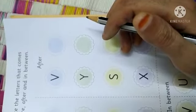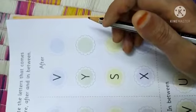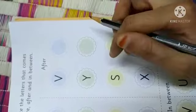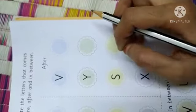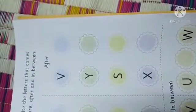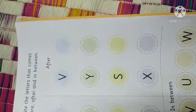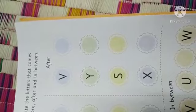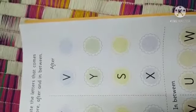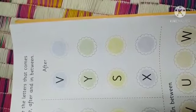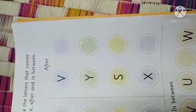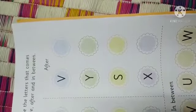Eek baar hum loog A, B, C, D kertate hai. L, M, N, O, P, Q, R, S, T, U, V. V ke pehle ke aata hai? U. Toh, before ho gaya. V, W. W kya ho gaya? After.